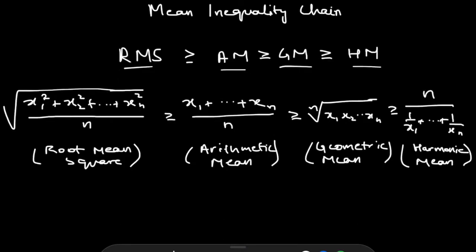The inequality states that the root mean square is always greater than or equal to the arithmetic mean, which is always greater than or equal to the geometric mean, which is always greater than or equal to the harmonic mean of a set of real numbers.